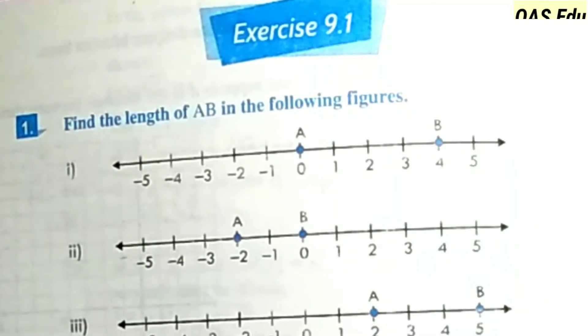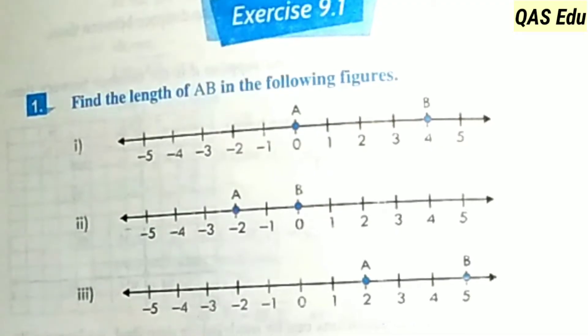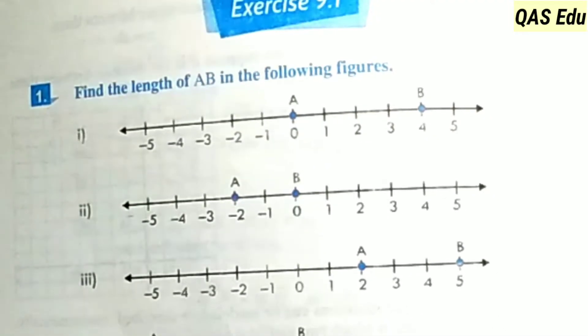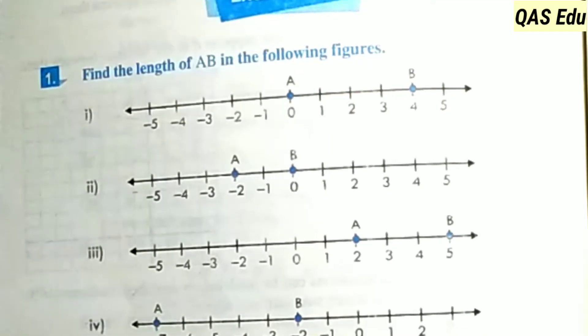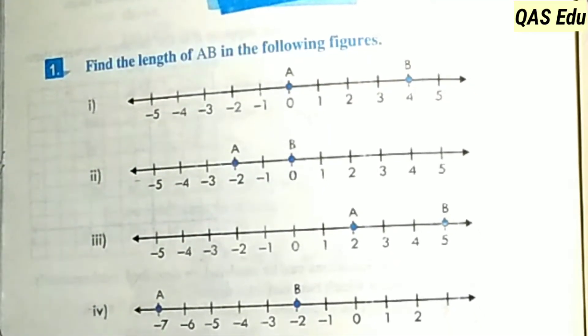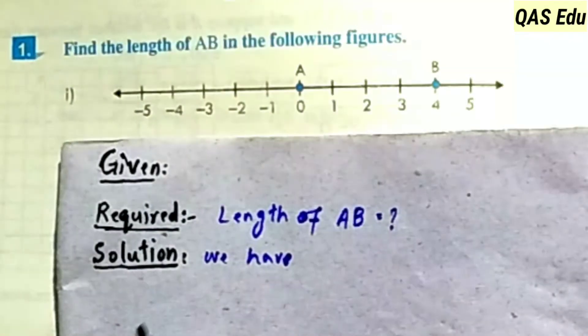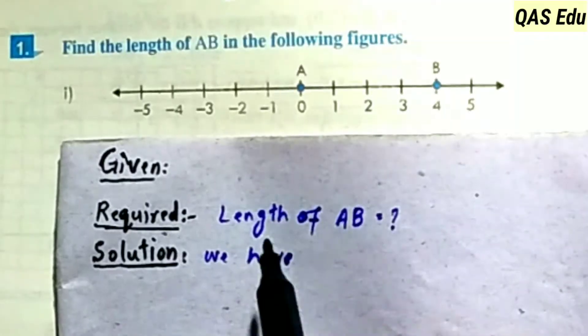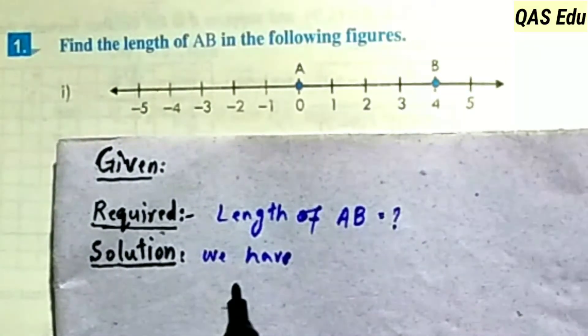In the name of Allah. We are in the last minutes of exercise 9.1, question number 1: find the length of AB in the following figures. We have to explain that AB is the length — every one of us has a point A and a point B. Given that the picture is the diagram, we have to explain that the length of AB is required.